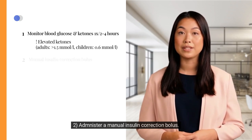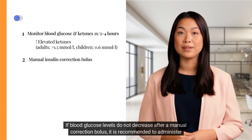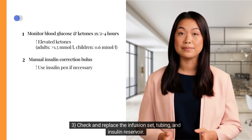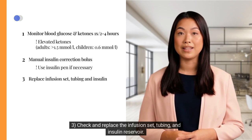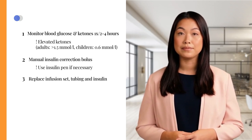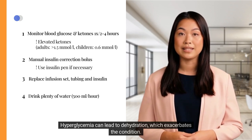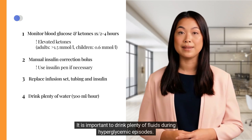Step 2: Administer a manual insulin correction bolus. If blood glucose levels do not decrease after a manual correction bolus, it is recommended to administer an insulin bolus using an insulin pen. Step 3: Check and replace the infusion set, tubing, and insulin reservoir. Drink an adequate amount of water — for example, 500 ml per hour. Step 4: Hyperglycemia can lead to dehydration, which exacerbates the condition, so it is important to drink plenty of fluids during hyperglycemic episodes.